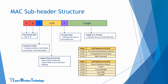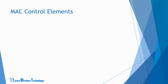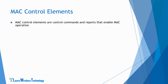So this covers the structure of MAC PDU and its header. Now let's talk about MAC control elements. Basically, MAC control elements are control commands and reports that enable MAC operation. This control and reporting information can be piggybacked on data payloads of DLSCH and ULSCH transport channels. As per the initial LTE release, there are 6 control elements defined in MAC specifications — 3 sent on DLSCH (from E-NodeB to UE) and 3 sent on ULSCH (from UE to E-NodeB).